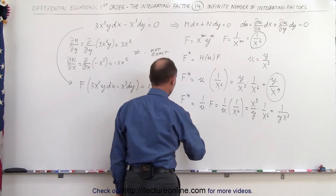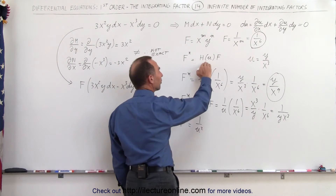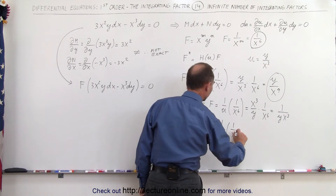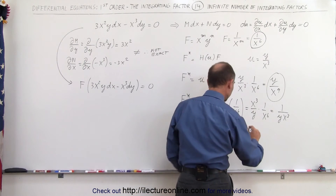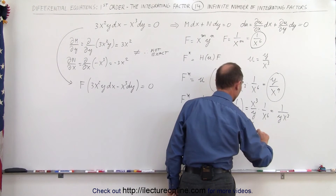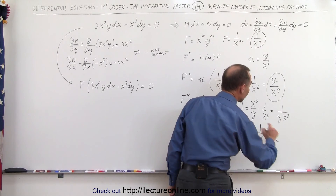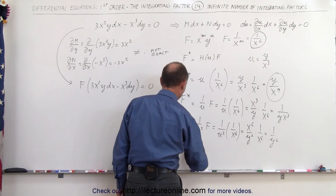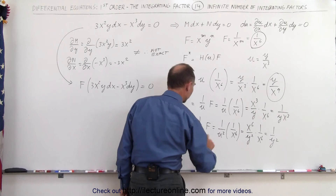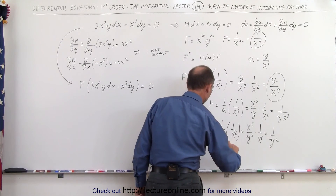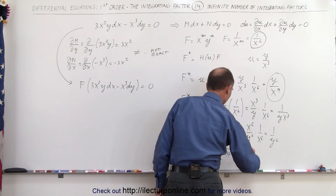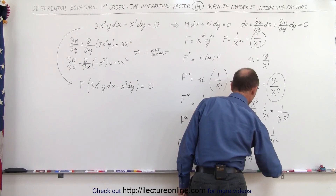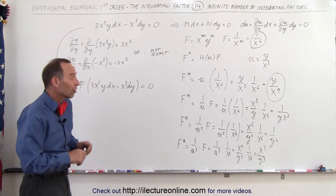We can find another integrating factor by taking 1 over u squared — again a function of u — times the integrating factor 1 over x to the sixth. That equals 1 over u squared times 1 over x to the sixth, which works out to 1 over y squared. If you remember a couple of videos ago, we also found this to be one of the integrating factors. Similarly, taking 1 over u cubed multiplied times 1 over x to the sixth gives x to the ninth divided by y cubed times 1 over x to the sixth, which equals x cubed divided by y cubed — yet another integrating factor.